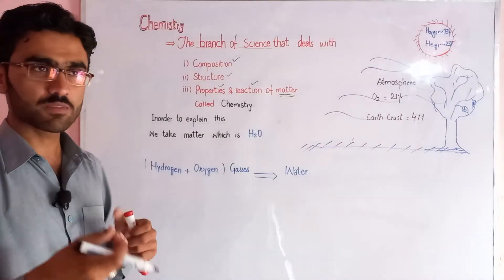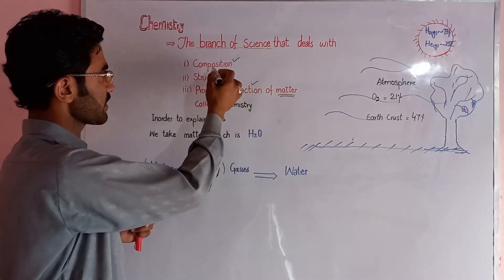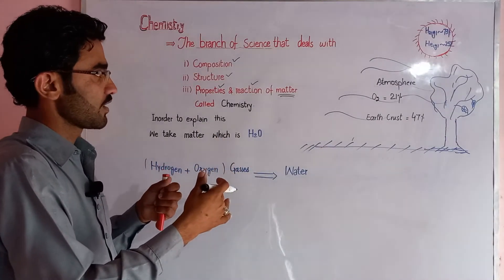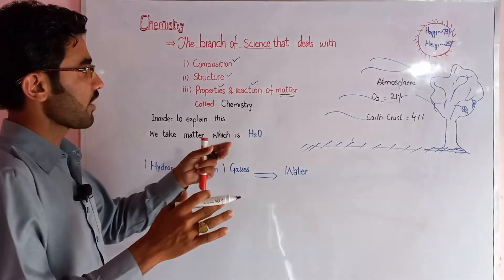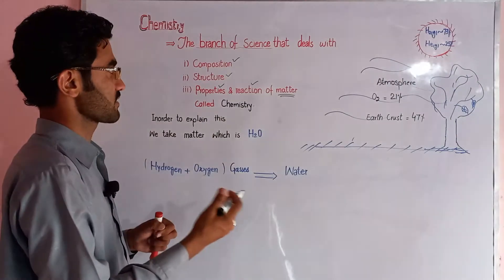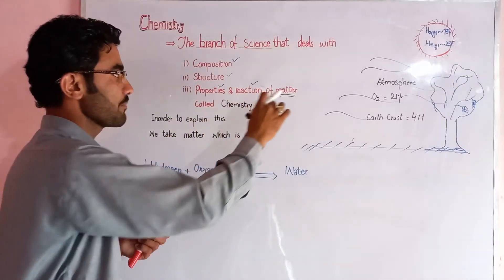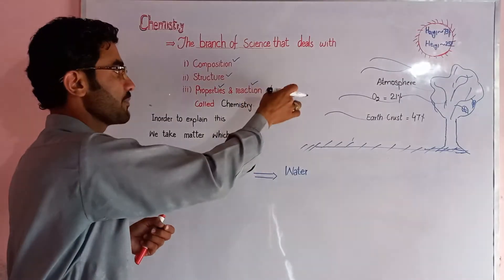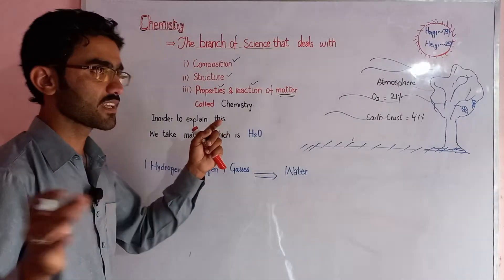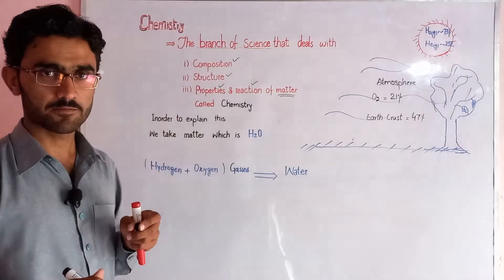Matter کی composition کو سمجھنا — what does it mean? Matter کی composition means وہ اجزاء جن سے مل کے matter بنا ہے، اس substance کو matter کہیں گے جس سے collective matter came into existence. تو اس matter کی composition کیا ہے؟ اس کی structure کیا ہے؟ اس کی properties کیا ہیں؟ اور ان کے مابین reactions کس قسم کے ہوتے ہیں؟ ان تمام چیزوں کا مطالعہ chemistry میں کیا جاتا ہے۔